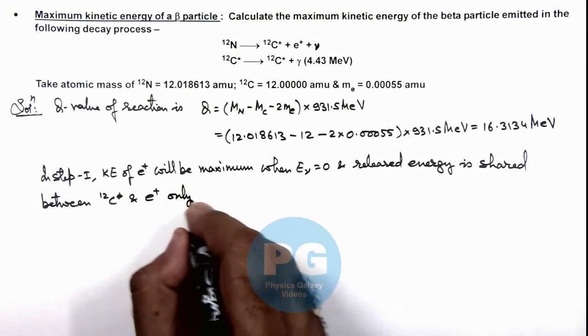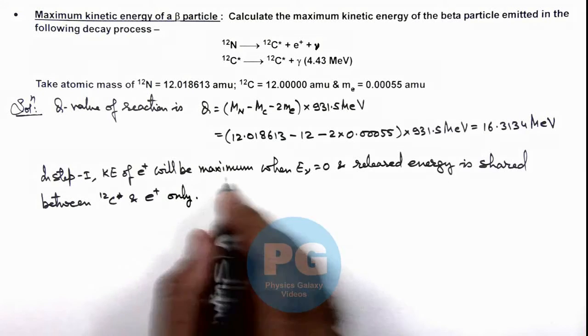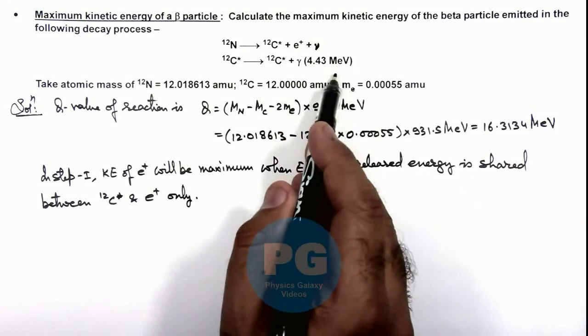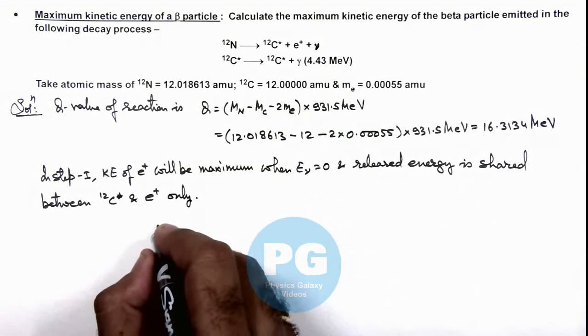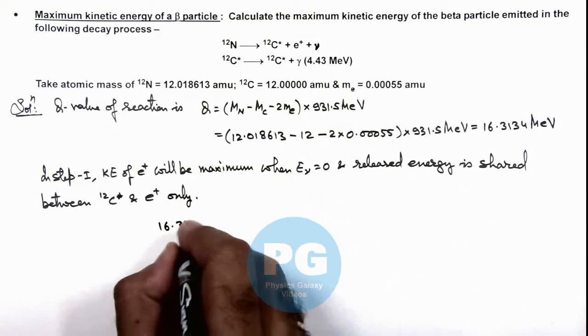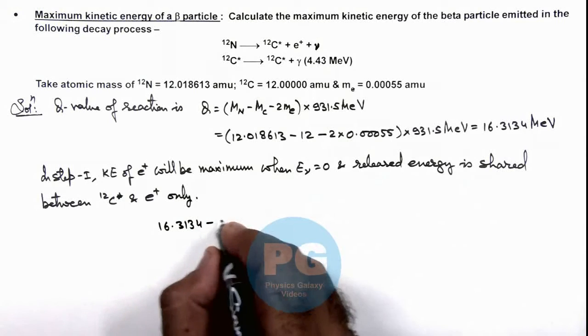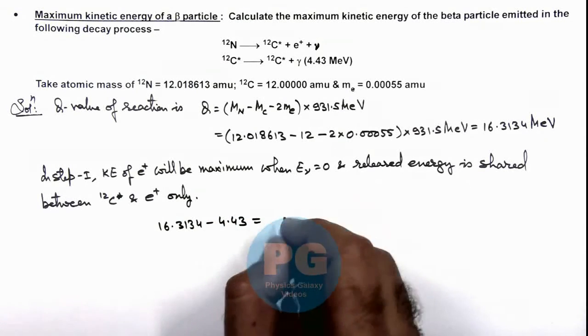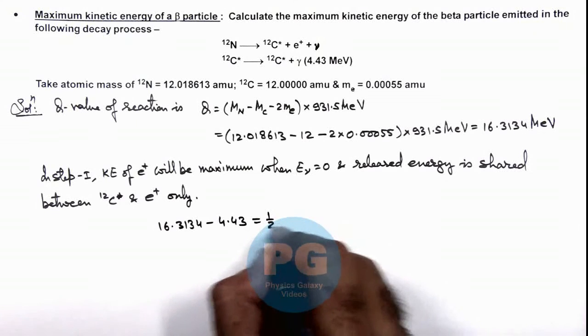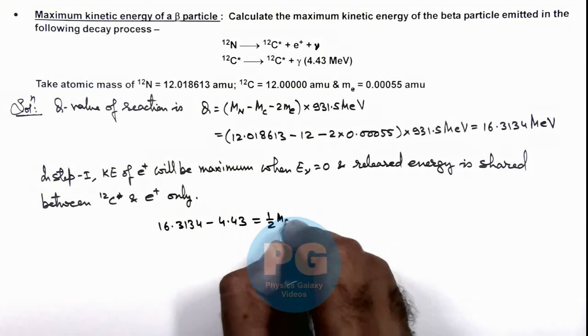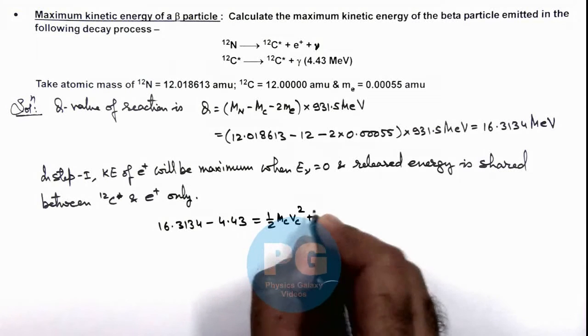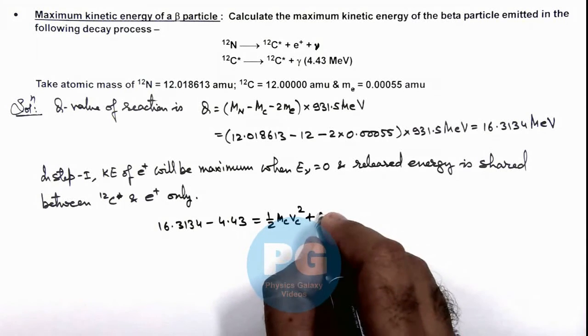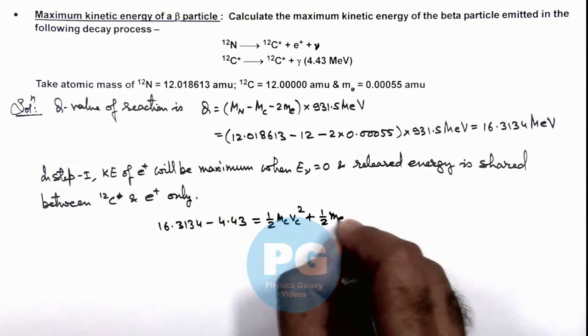In this situation, if we write the equation, out of the total released energy, 4.43 MeV is absorbed by the carbon. So we can write 16.3134 minus 4.43 equals the kinetic energy of carbon, which is ½mcvc², plus that of the beta particle, which is ½meve².